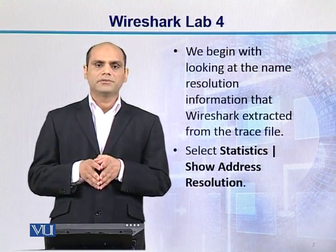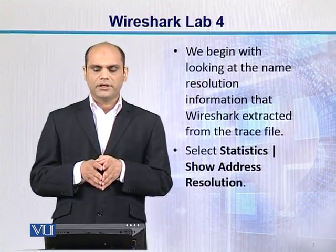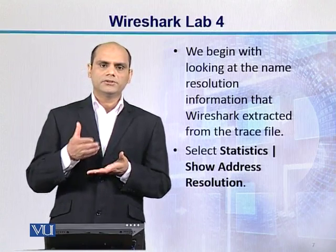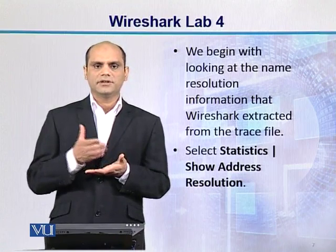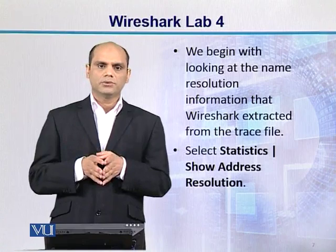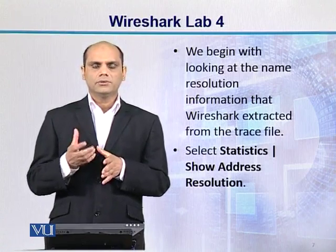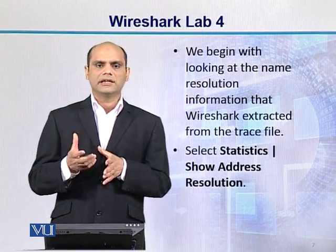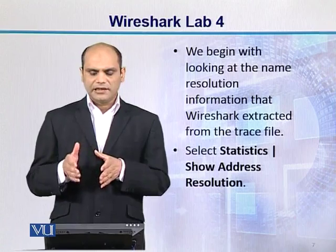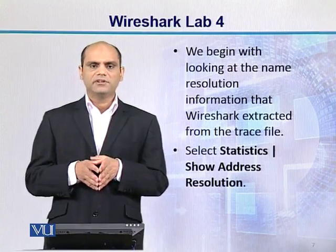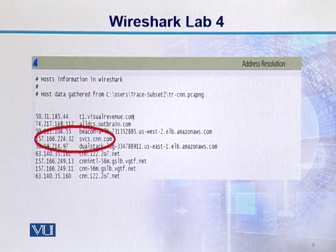We begin with looking at the name resolution information that Wireshark extracted from the trace file. Hum sabse pehle dekhte hain ki Wireshark ne jab capture kiya, cnn.com ke jo servers hain, unki jo DNS resolution hai, unke IP addresses kya hain. Is ko examine karne ke liye, Statistics mein jayen aur Show Address Resolution mein jayen, toh humen is tarah ki ek window nazar aayegi.